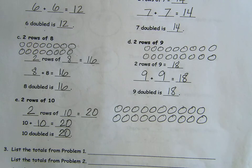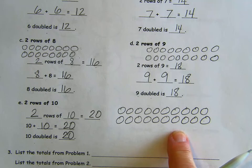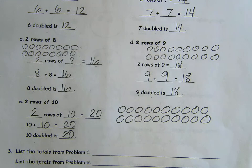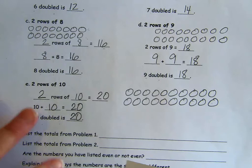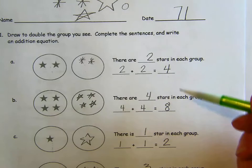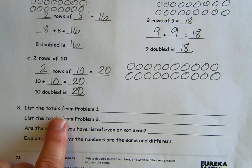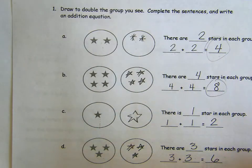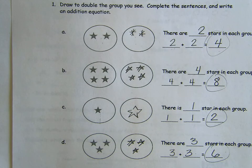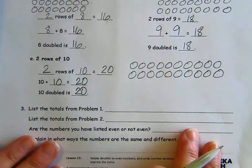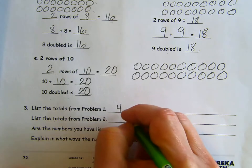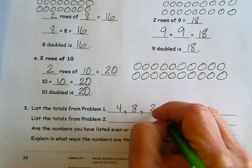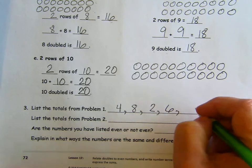Good work. Pause if you need to copy any of that if you're checking your arrays. Number three asks that we look at our totals. And we are going to list all the totals from problem one. So problem one, these are the totals. Four, eight, two, six, and ten. And we're going to list those right here. I'm writing a list so I'm putting a comma in between. I have four, eight, two, six, and ten.